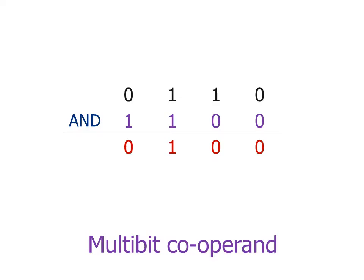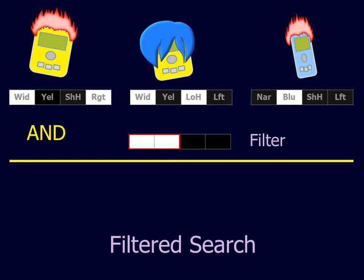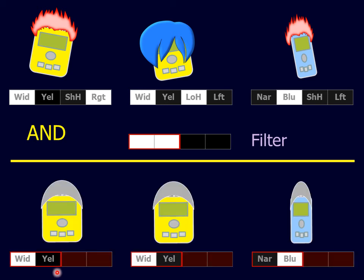A multi-bit co-operand can be used to filter or mask selected bits. In the database example, if a search is only interested in size and color, we can set those bits of the filter to 1 and the remaining bits to 0. The filter will then only pass the desired attributes. Note that the attributes that are filtered out must now be ignored.